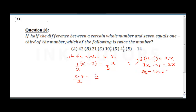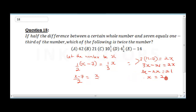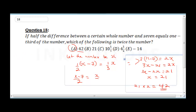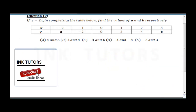So 3x minus 2x gives us x equals 21. The question asks for twice the number, so 21 times 2 equals 42. Twice the number is 42, and the correct answer is option A. Now let's move to question 19.